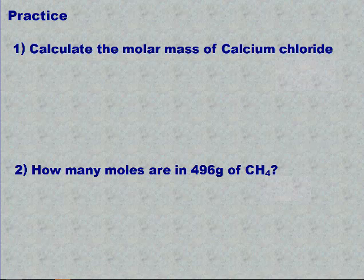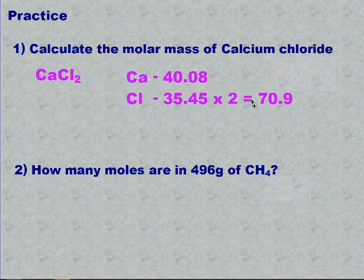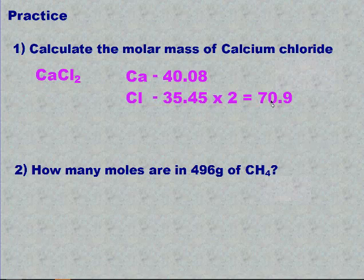In this problem, it says calculate the molar mass of calcium chloride. Step one is you have to write the formula of calcium chloride. Well, calcium is a plus two and chlorine is a negative one, so we get CaCl2. From the periodic table, we can see that calcium has a mass of 40.08 and chlorine is 35.45. But I have two chlorines, so the overall mass of chlorine is 70.9. So adding these up, you get the molar mass of calcium chloride, which is 110.98 grams per mole.